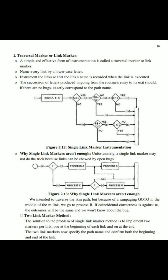The second type is the Traversal Marker or Link Marker. A simple and effective form of instrumentation is called a traversal marker or link marker. Name every link by a lowercase letter — for each process, give it a name using lowercase letters. Instrument the link so that the link's name is recorded when the link is executed. For example, for a process, after it executes, assign it a lowercase letter name like 'a', then 'b' for the next, and so on as shown in the diagram.